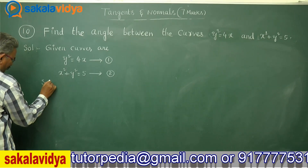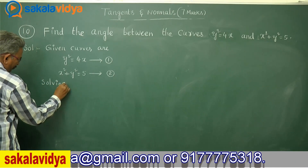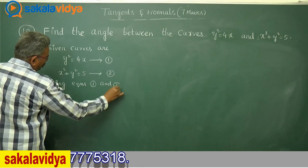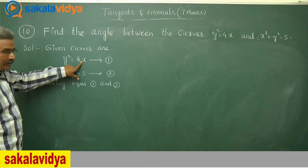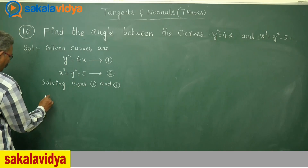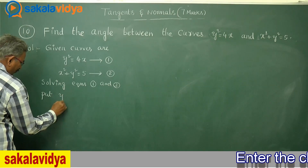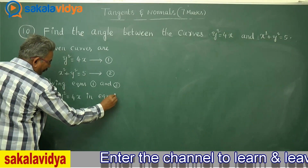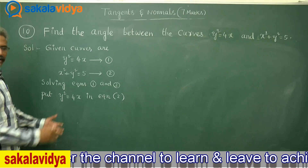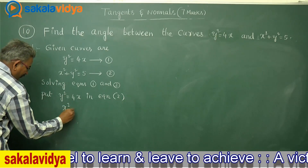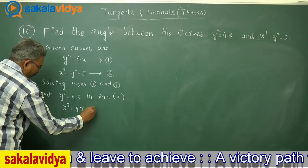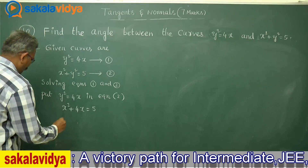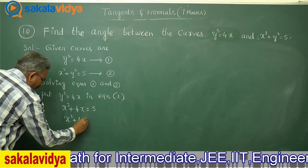Now solving equations 1 and 2: in place of y², we can directly replace it with 4x. So putting y² = 4x into equation 2, equation 2 becomes x² + 4x = 5. This can be put in the form of a quadratic equation in terms of x: x² + 4x − 5 = 0.